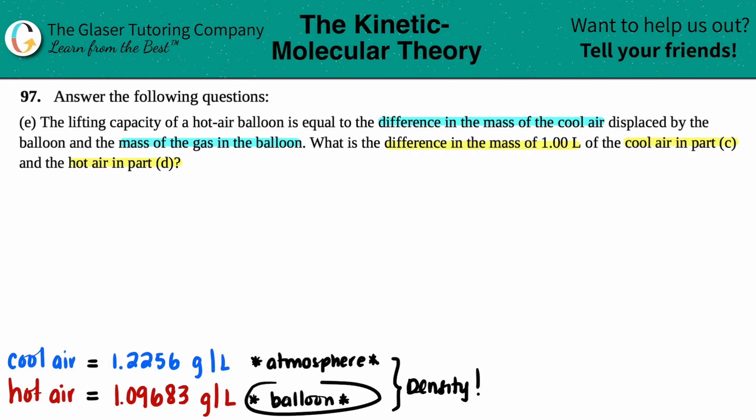That's why a hot air balloon rises, because the less dense substance will always be above the other substance. So that's why the hot air balloon is able to rise in the atmosphere, because it's just less dense. The hot air is coming from the balloon and the cool air is coming from the surrounding atmosphere.